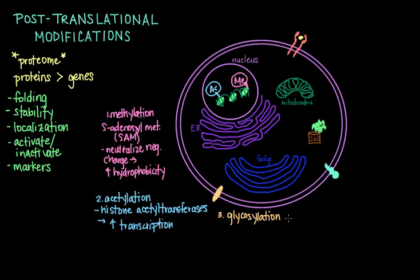These carbohydrates can be added to the nitrogen atom in the side chain of asparagine residues—those are N-linked—or to the oxygen atom in the side chains of serine or threonine residues, which are O-linked. These types of glycosylation changes form major structural components of cell surface and secreted proteins.